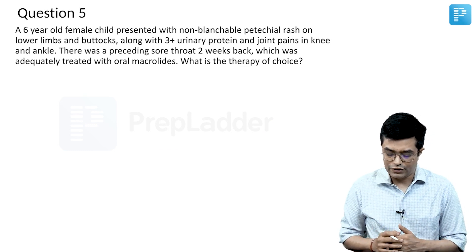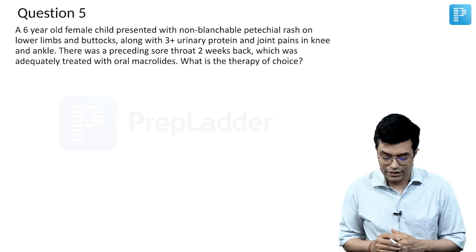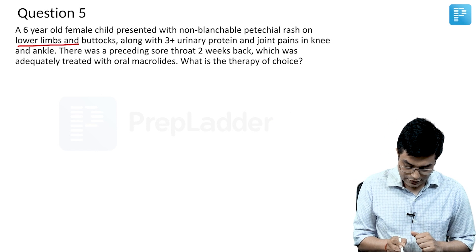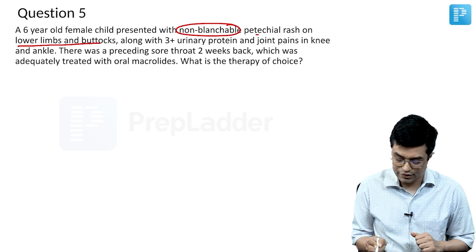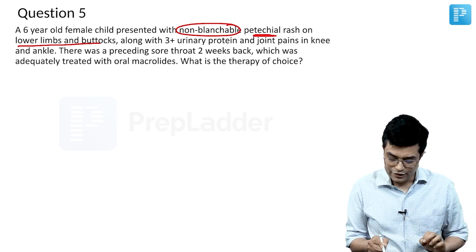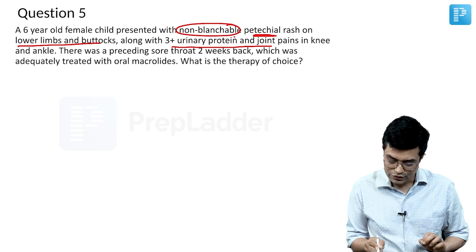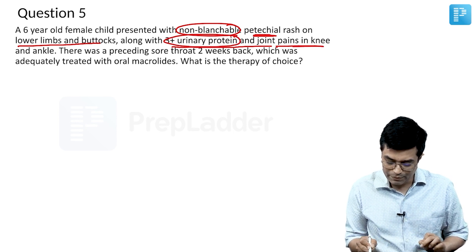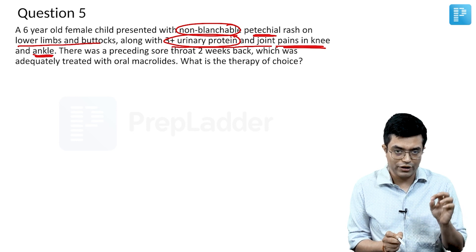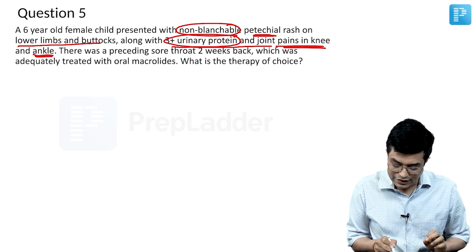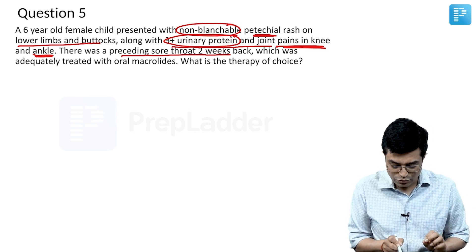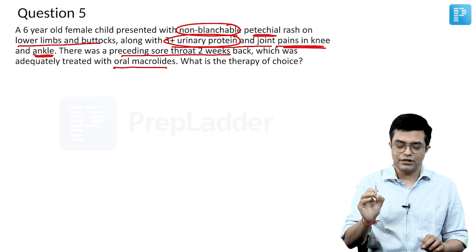A six-year-old female child presented with non-blankable petechial rash on the lower limbs and buttocks, three plus urinary proteins indicating renal involvement, joint pains in knee and ankle showing large joint arthralgia, and a preceding sore throat two weeks back that was treated with oral macrolides. What is the therapy of choice?